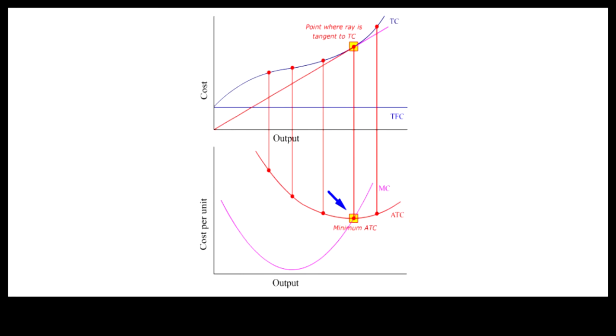Second, ATC has a symmetric U-shape because two points on opposite sides of the minimum ATC point on TC have equal slopes.